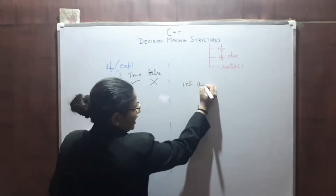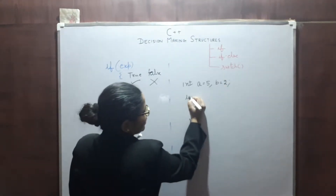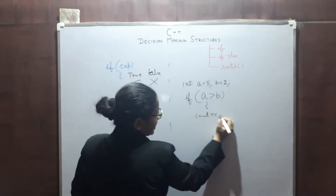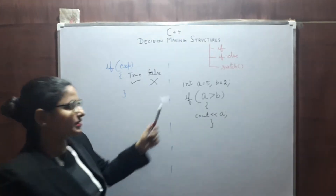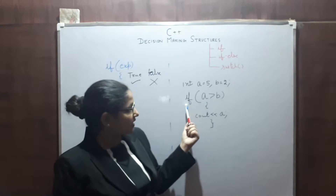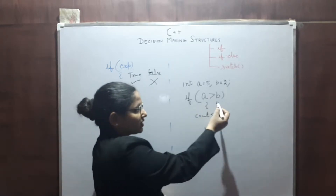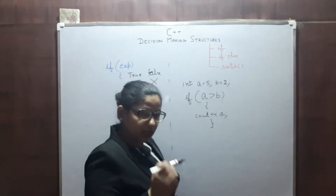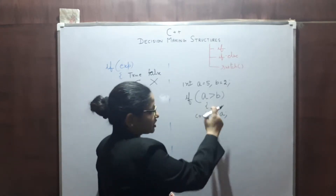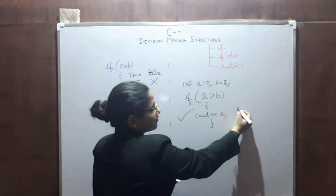If A equals 5 and B equals 2, and if A is greater than B, then cout A. So what these statements are doing: firstly we are declaring A and B, then we are checking whether A is greater than B or not. In our case, A is greater than B, so the output of this expression is true, and this block of instruction will be executed. So you will get A in the output.